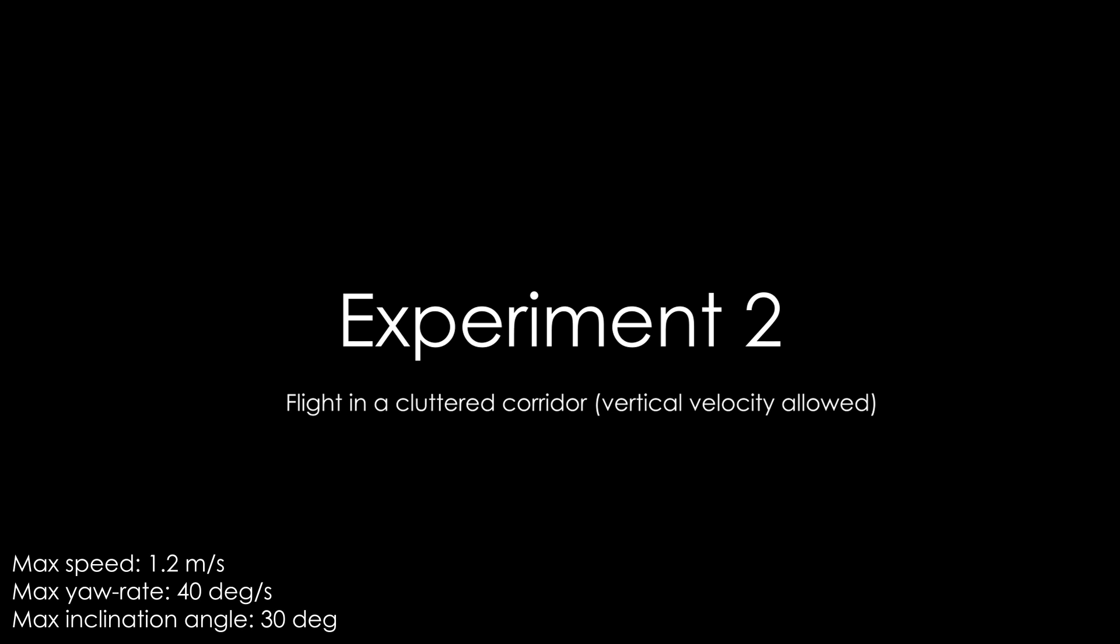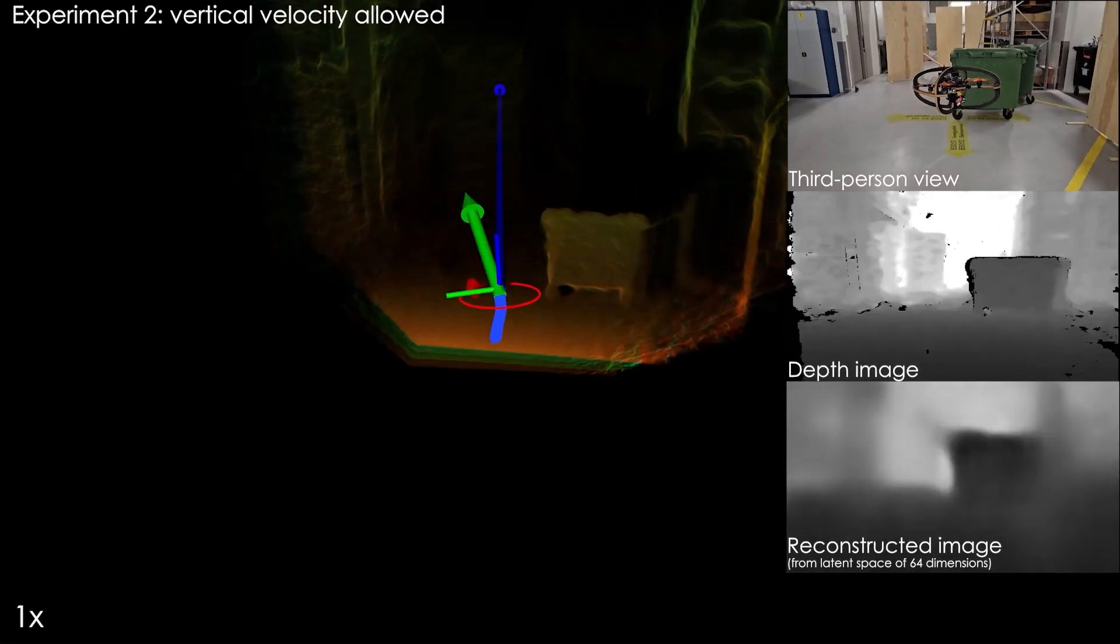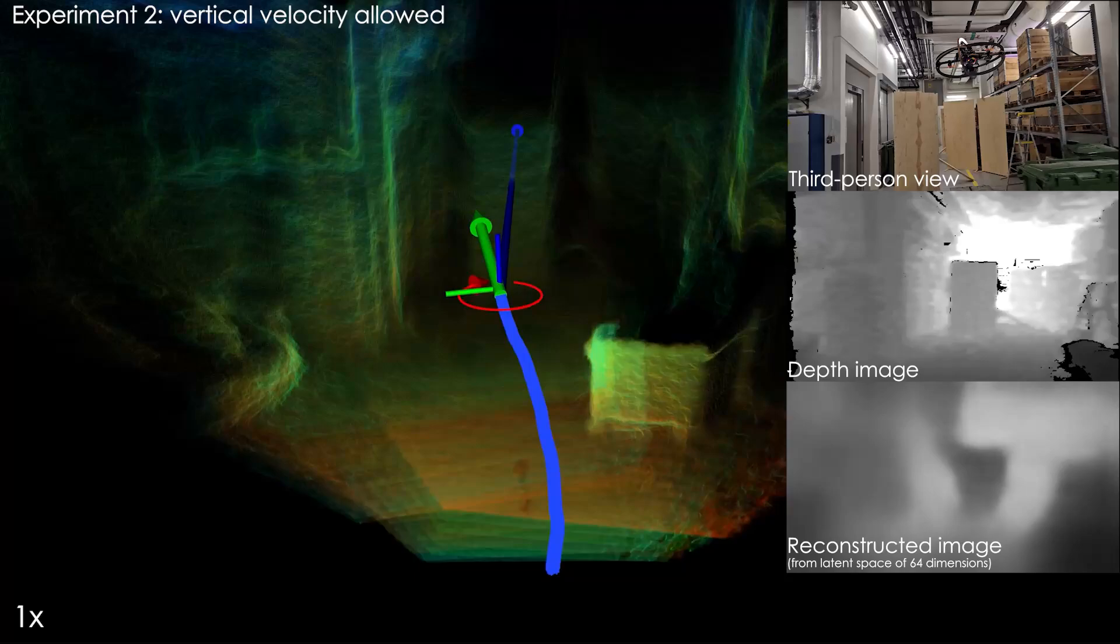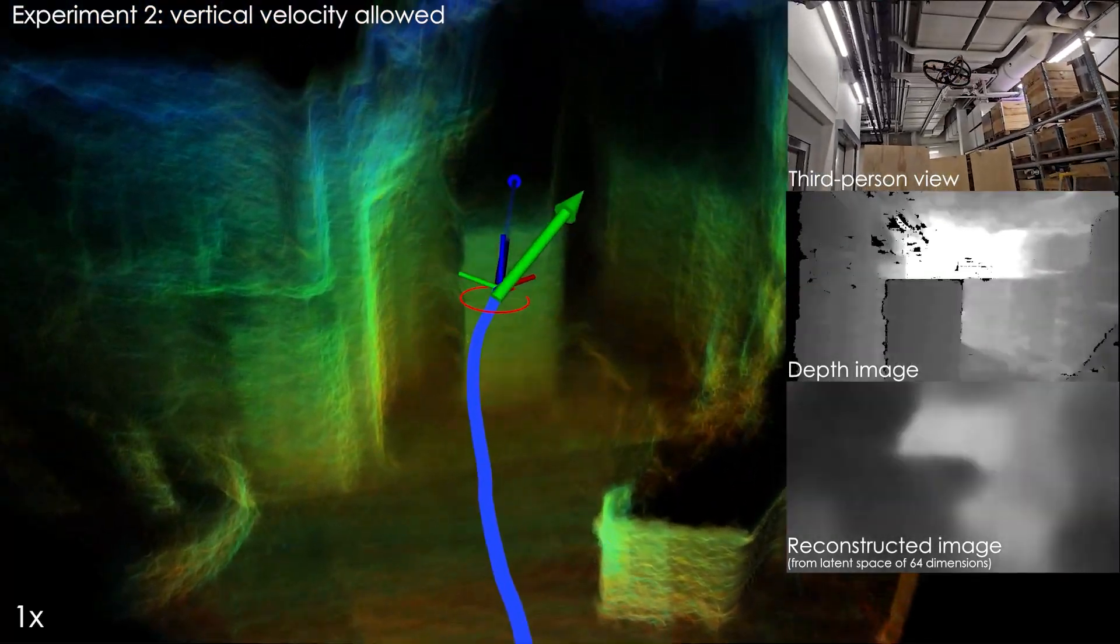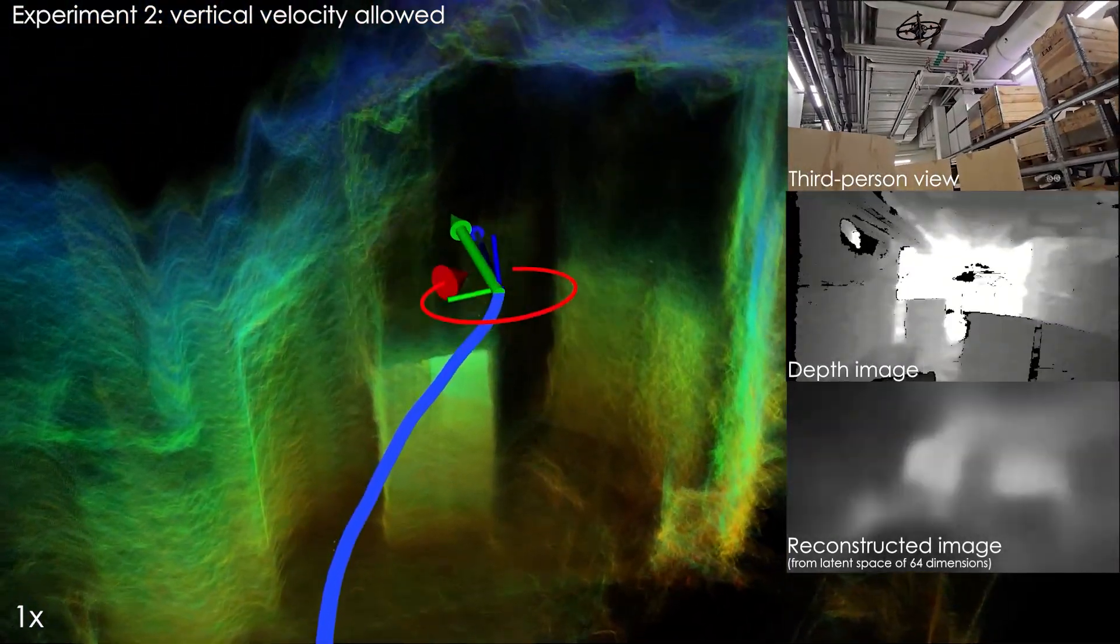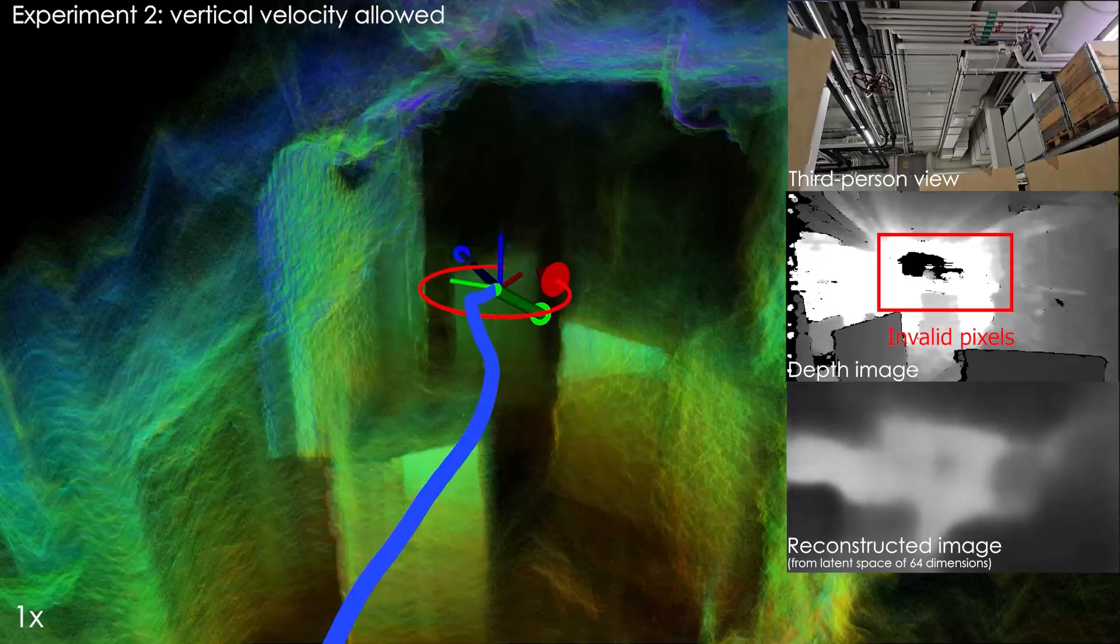In the second experiment, we remove the restriction on the vertical velocity and test in the same environment. In this case, the robot takes a natural collision-free path above the obstacles and navigates to the goal location.